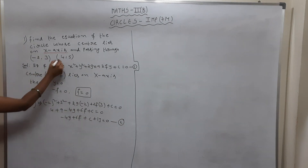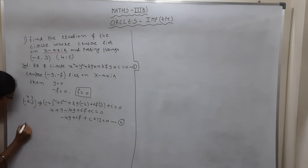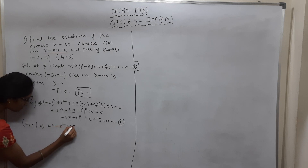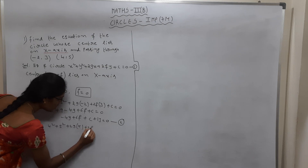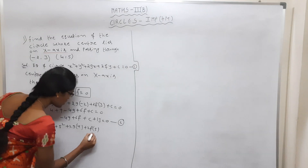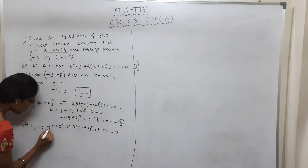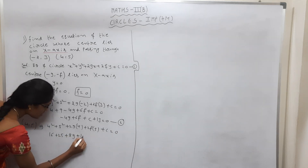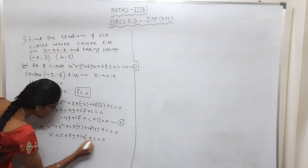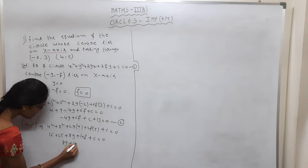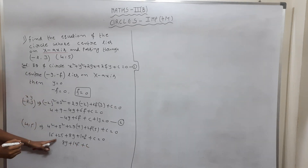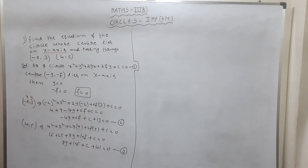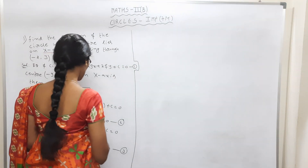Now take the other point (4, 5). Substitute: 4² + 5² + 2g(4) + 2f(5) + c = 0, giving 16 + 25 + 8g + 10f + c = 0. Writing in order: 8g + 10f + c + 41 = 0. Consider this Equation 3.